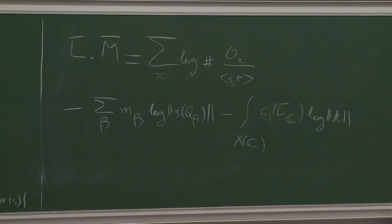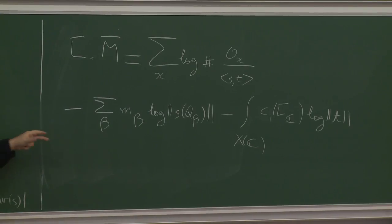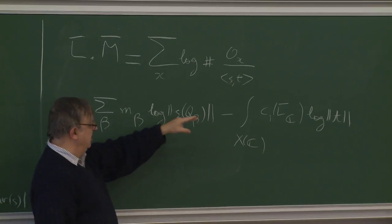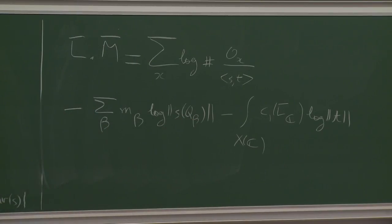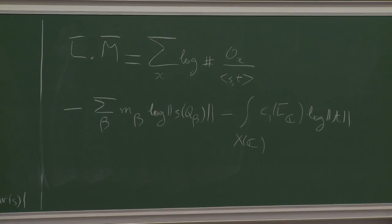They are disjoint, but still they repel each other — there is a notion of electrostatic on the Riemann surface, a repulsion force between the divisors. This is counted in the intersection formula: I take minus the sum over beta of m_beta times log of the norm of s at Q_beta. That's the first term. And second, we take an integral: the integral over X_C of c_1(L-bar_C) multiplied by log |t|. So the formula is quite complicated compared to the vertical case.